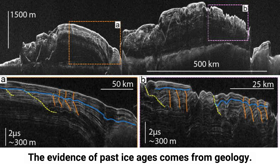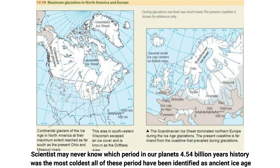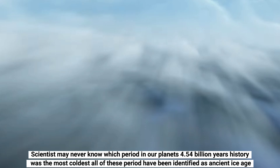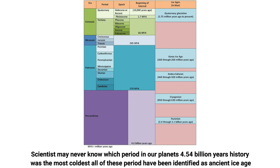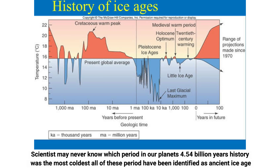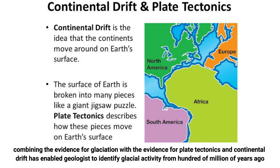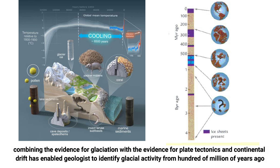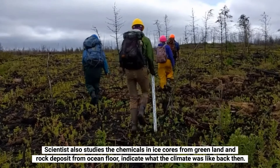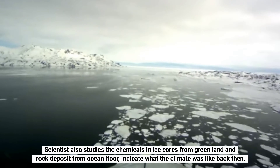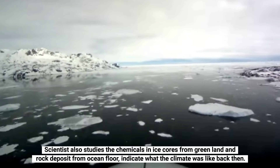The cold periods with advancing glaciers are named glacials, and the warm periods with retreating glaciers are called interglacials. Interglacials are still part of the glacial epoch. Evidence of past ice ages comes from geology. Scientists study chemicals in ice cores from Greenland and rock deposits from the ocean floor to indicate what the climate was like back then.